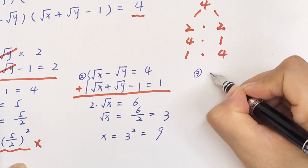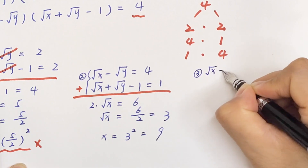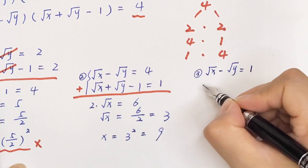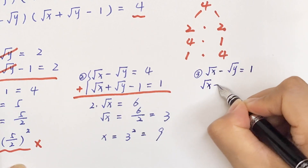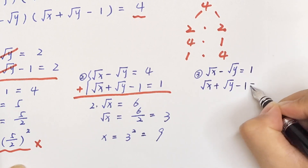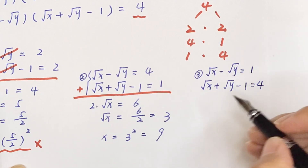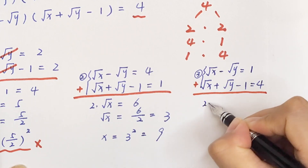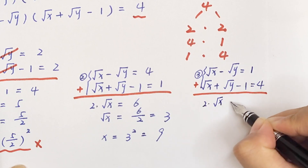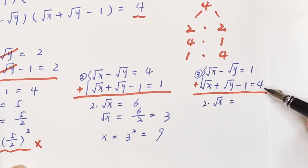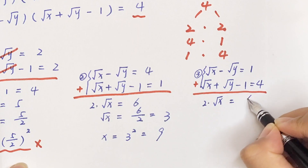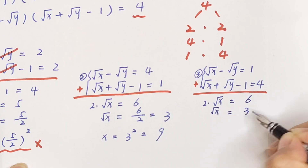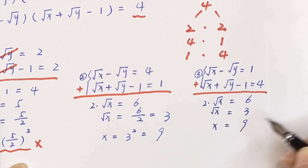Checking the last case: square root of x minus square root of y equals 4, which again leads to square root of x equals 3 and x equals 9.